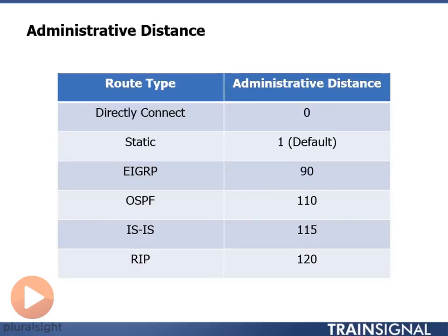The administrative distance. We have these two types of protocols: link state and distance vector. Protocols fall into them. So far I've told you about several routing protocols. We had our exterior gateway protocol, which was BGP. We have our interior gateway protocols: EIGRP, OSPF, ISIS, and RIP.